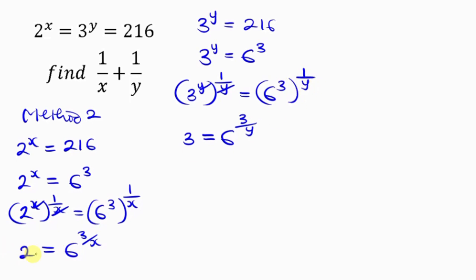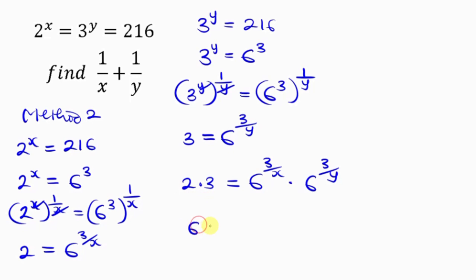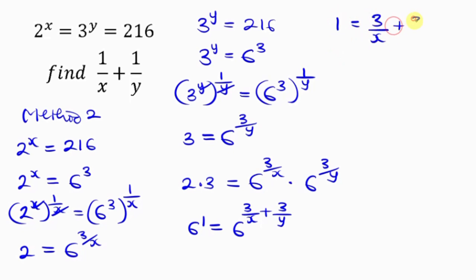Our next step is to multiply these two equations together. Multiplying, we get 2 times 3 on the left, equal to 6 to the power of 3 over x times 6 to the power of 3 over y. Since 2 times 3 equals 6, and the bases on the right are the same, we add the powers: 6 equals 6 to the power of 3 over x plus 3 over y.